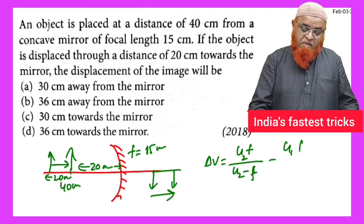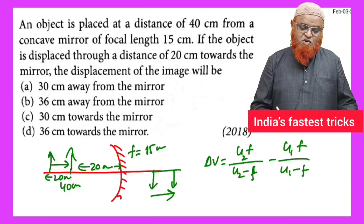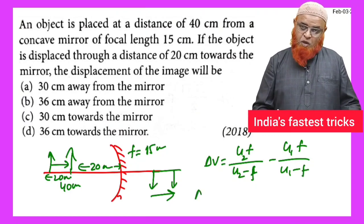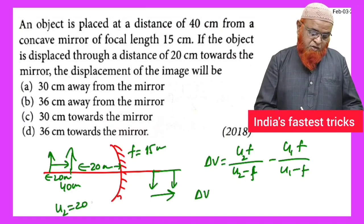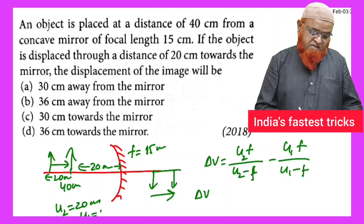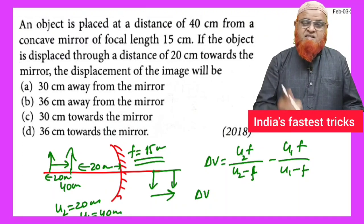So what is u2? Here u2 is taken as 20 centimeters and u1 is taken as 40 centimeters. F is constant. You just see how wonderfully this formula will work without any tension, without any confusion.